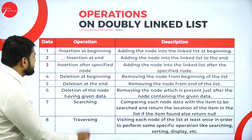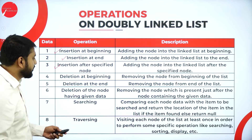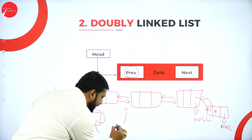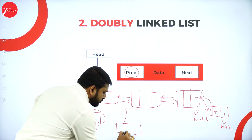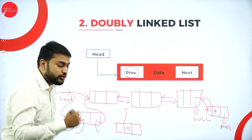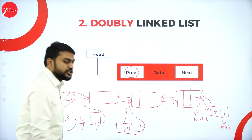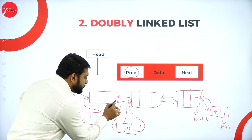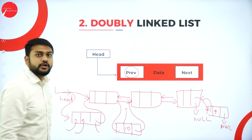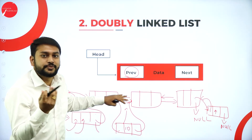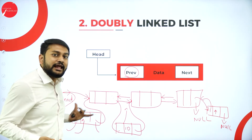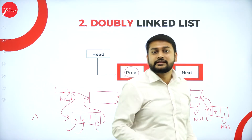Insertion after a specified node: create the node, insert the data (say 10), store the address of the next node in the new node's next part, store the address of the previous node in the new node's previous part, then update the next pointer of the preceding node and the previous pointer of the following node to point to the new node. You must first traverse to find the target location.